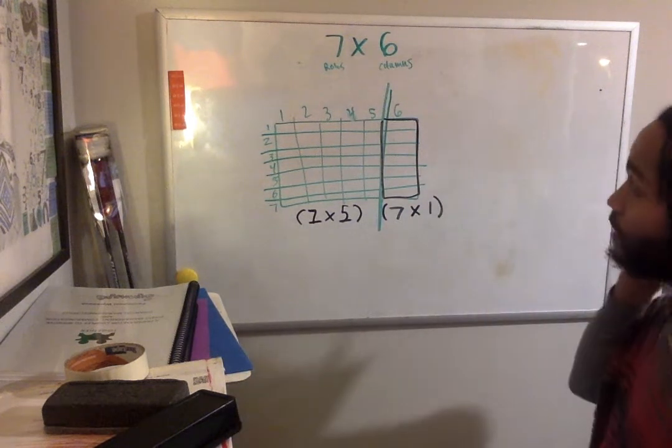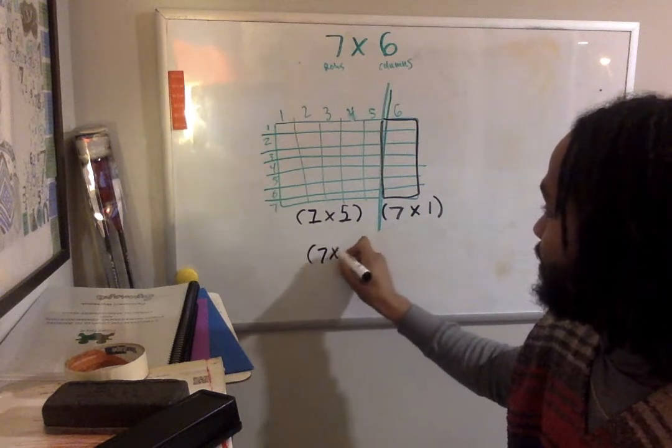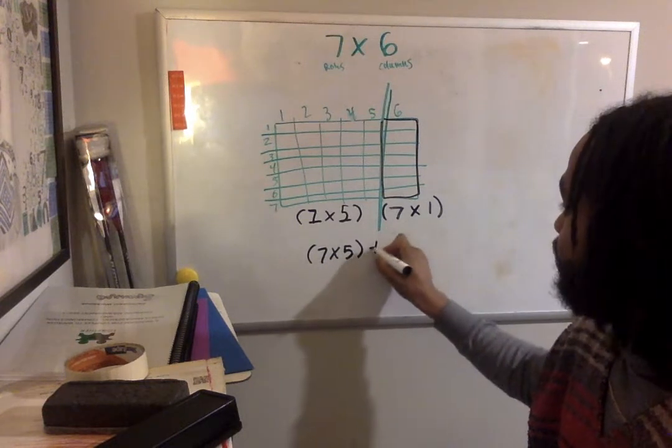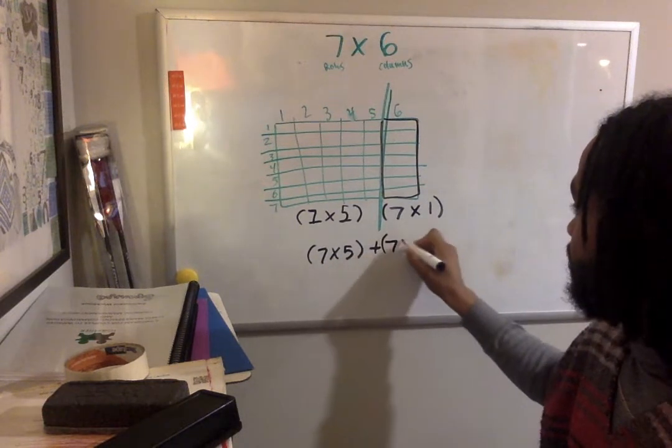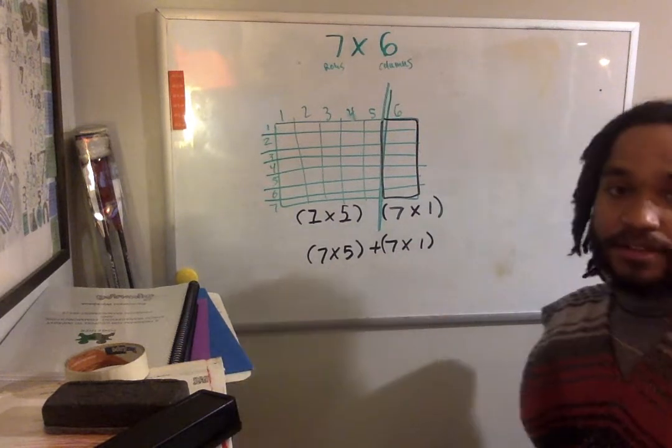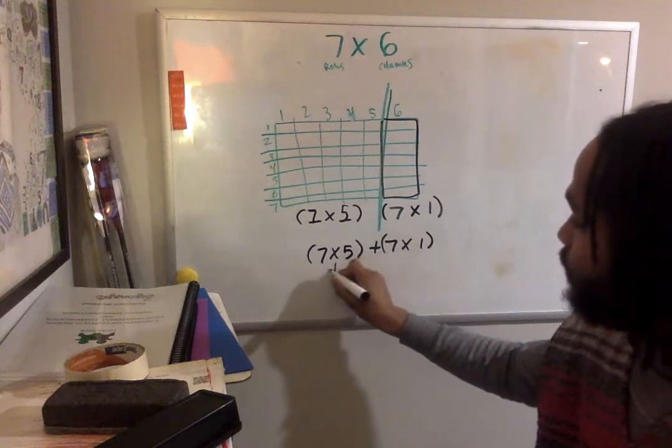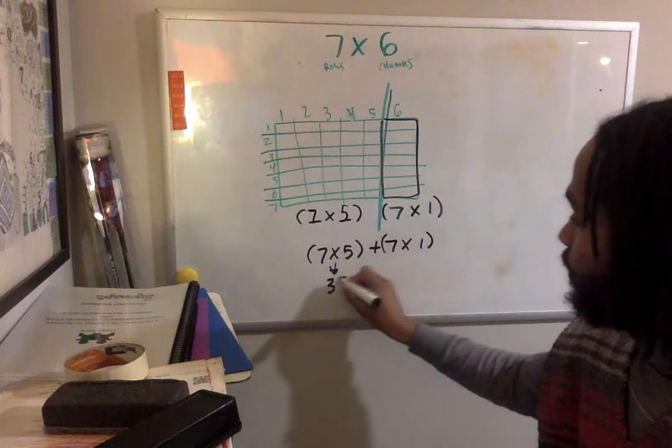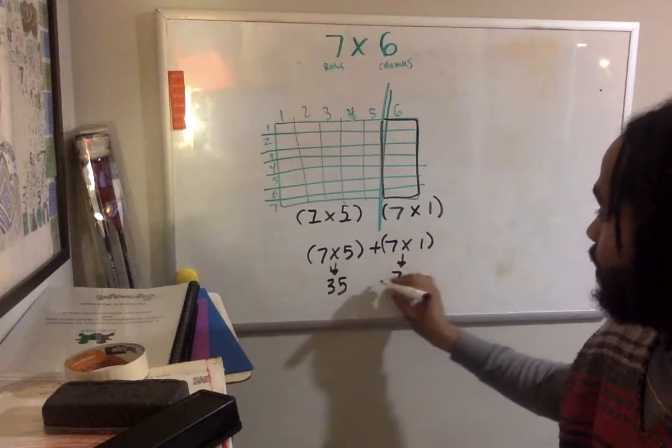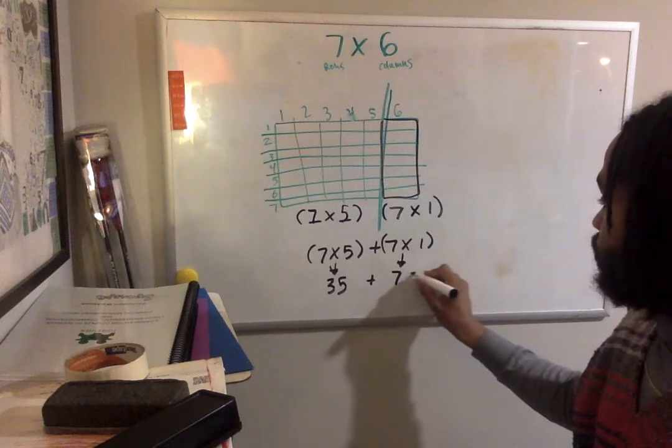So my new equation is seven times five in parentheses plus seven times one in parentheses. Seven times five, I can skip count by five: 5, 10, 15, 20, 25, 30, 35. I'm going to write 35 right under. Seven times one is seven. And now I simply have to add 35 plus seven, and that equals 42.